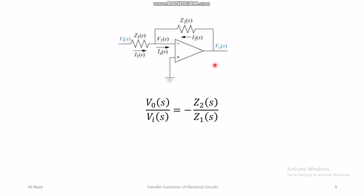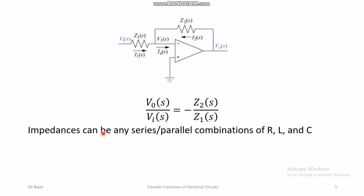For a digital PID controller, you simply write the program inside a microcontroller. But in the past, people used to design these circuits using operational amplifiers. For an op-amp, the transfer function — the ratio of the Laplace transform of output voltage to input voltage — is Z₂ over Z₁, where Z₂ is the feedback impedance and Z₁ is the input impedance. Z₁ and Z₂ can be any series or parallel combination of R, L, and C, and all circuit rules including KCL, KVL, and Ohm's law apply in the Laplace domain.